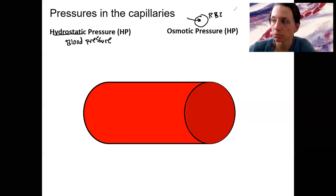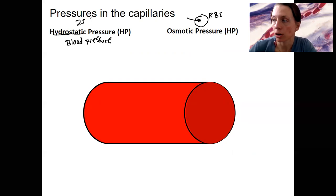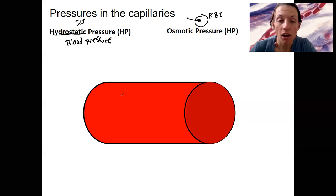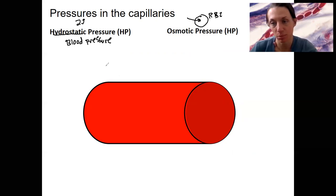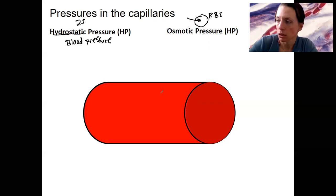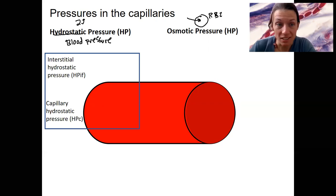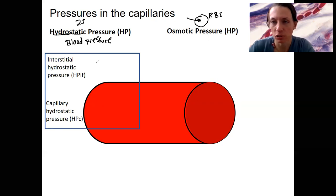These are the two pressures we need to consider — the two pressures relevant in the capillary. These pressures are present both in the capillary and outside of it. There is always an interstitial hydrostatic pressure — the hydrostatic pressure of the interstitial fluid — and it's typically pretty low, but it's something.